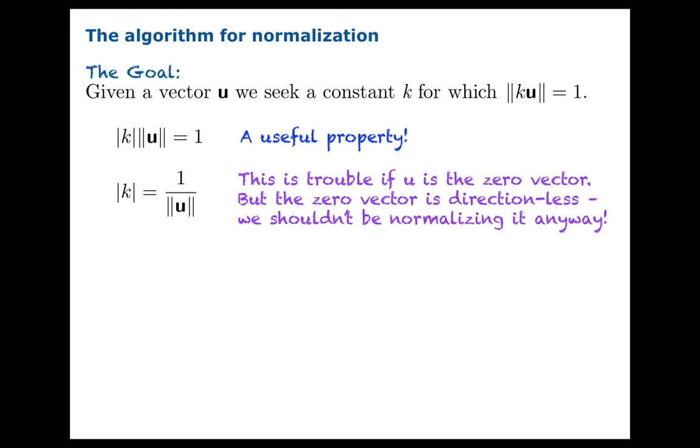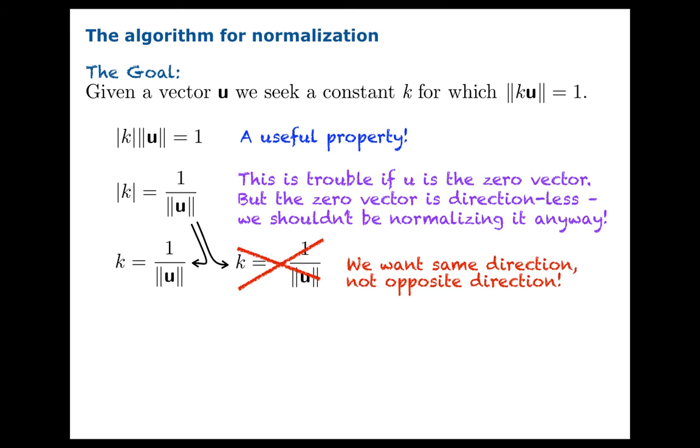But that shouldn't be a problem because the 0 vector has no direction. So there's really no point in trying to normalize it anyway. We'll assume that u is not the 0 vector. Now, absolute value of k being that quantity, we can take k equals plus or minus that quantity. But this expression on the right, we don't want that guy because the norm of u is positive. It means that negative 1 over norm of u is negative and we don't want to flip. We want the same direction, not the opposite direction.